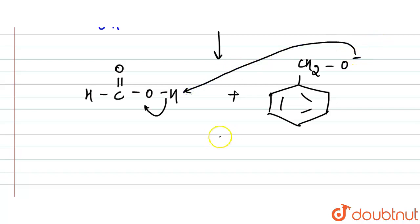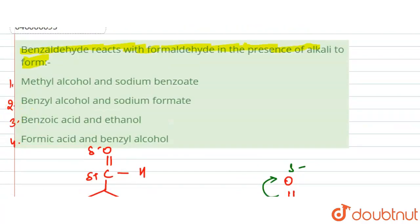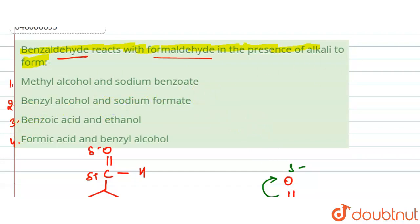This gives us the formation of benzyl alcohol plus COO⁻Na⁺, which is sodium formate. This reaction is the Cross Cannizzaro reaction — when two different aldehydes (both without alpha hydrogens) react in the presence of alkali. So our answer is option number 2.